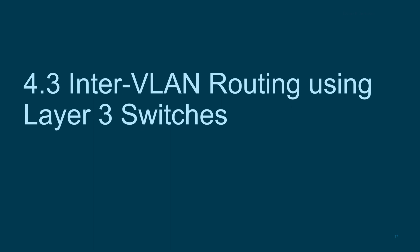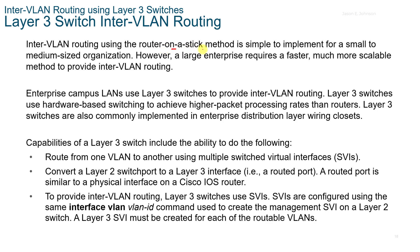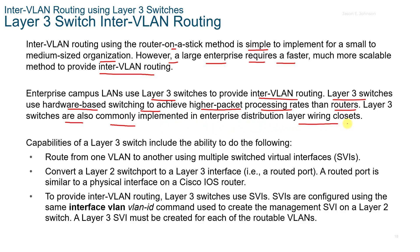4.3 Inter-VLAN Routing using Layer 3 Switches. The Router on a Stick method is simple to implement for small to medium sized organizations; however, large enterprises require a faster, more scalable method. Enterprise campus LANs use Layer 3 switches to provide inter-VLAN routing. Layer 3 switches use hardware-based switching to achieve higher packet processing rates than routers and are commonly implemented in enterprise distribution layer wiring closets. A Layer 3 switch can route from one VLAN to another using multiple SVIs, and can convert a Layer 2 switch port to a Layer 3 routed interface.